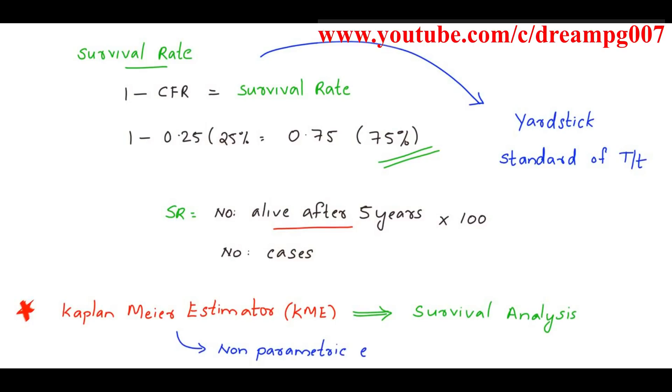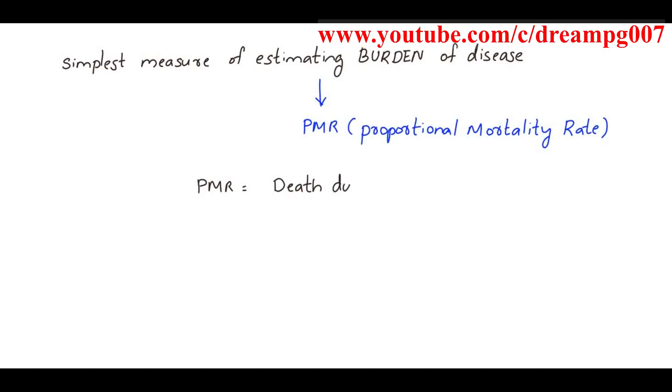Simplest measure of estimating burden of a disease in the community is by proportional mortality rate. Proportional mortality rate is calculated by the formula: death due to a particular disease divided by total death from all diseases multiplied by 100.